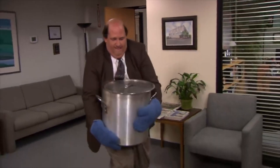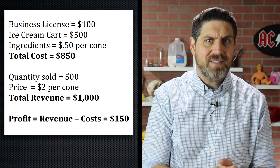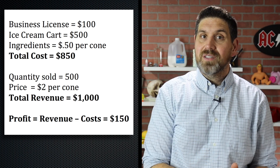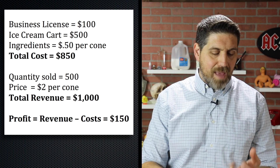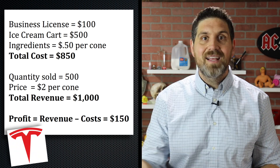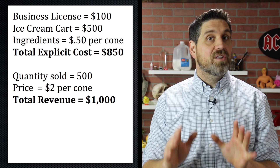But wait, there's a problem. What about all the time he spent making and selling the ice cream cones? He could have spent that time earning money by working for someone else or working on his other business. The costs we've looked at so far just include his explicit costs — his out-of-pocket costs for running a business. They don't include other things you need for making decisions, like his opportunity cost, his implicit costs. So let's add in his opportunity cost, which is the value of his time and energy, the foregone income, and the money he could have earned by putting the money into Tesla stock instead of buying the ice cream cart — the total dollar value of what he could have done with his money and his time. Let's assume that total value comes out to $500.